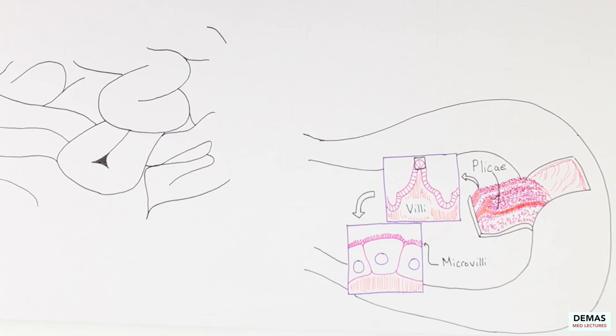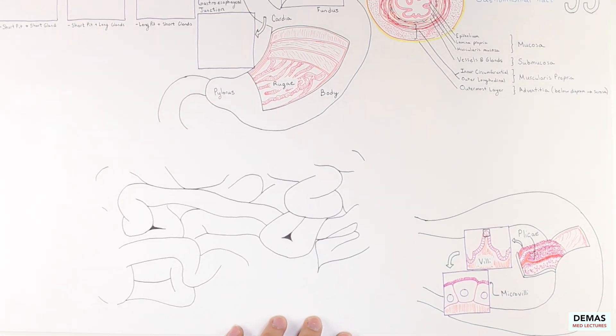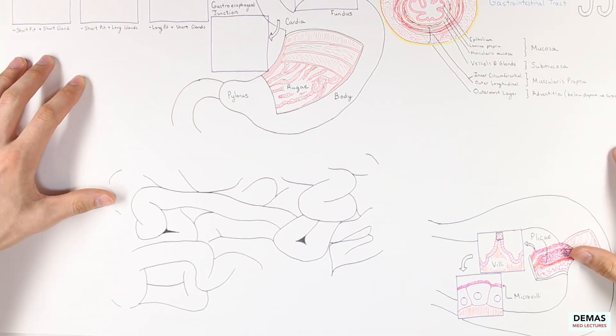The microvilli can help to even further increase the surface area for absorption. In total, the small intestine has roughly the surface area of 260-300 meters squared, which is roughly the size of a tennis court. Now that we understand the structural features of the small intestine, let's talk about the different parts.